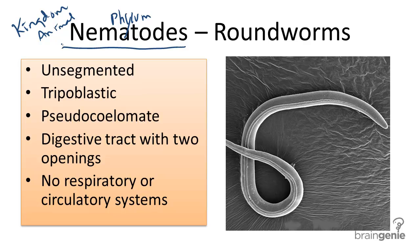First, they are unsegmented, restricting a bit of movement. They are triploblastic, meaning they contain three germ layers: ectoderm, mesoderm, and endoderm.